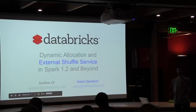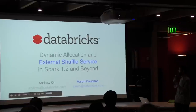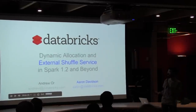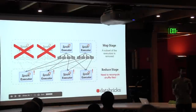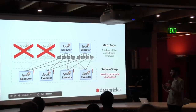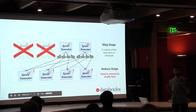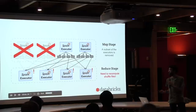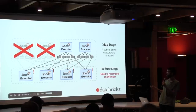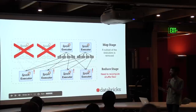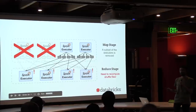Hi everyone. As Andrew said, I'm going to be talking about the external shuffle service. The problem we're trying to solve is that we fetch shuffle files from executors, and if the executor goes down, we can't fetch them anymore. But this is a fundamental problem because we wrote these files to disk — even though the executor process went down, the files are still there. There's just no one to give us those files.